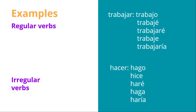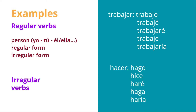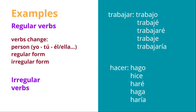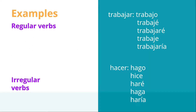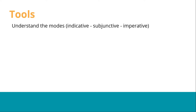You have to understand that verbs in Spanish will change according to the person — I, you, he, she, and all the rest — and they can be either regular or irregular. You also have to understand the three modes in Spanish: indicative, subjunctive, and imperative. The verb will change according to each mode.